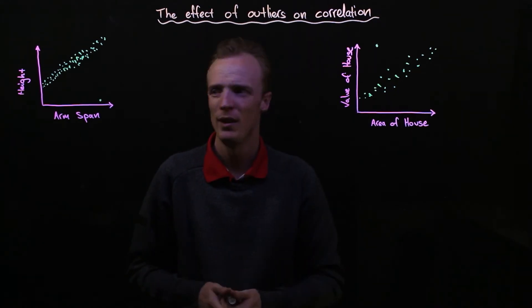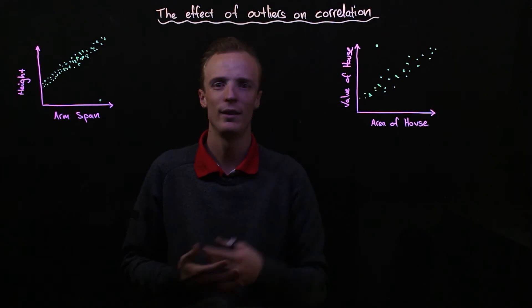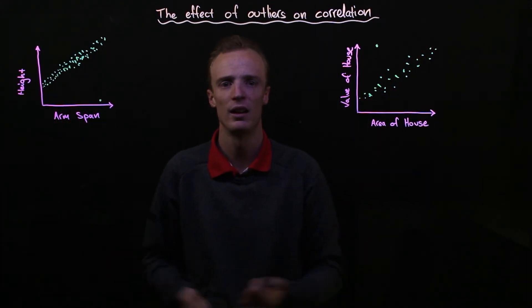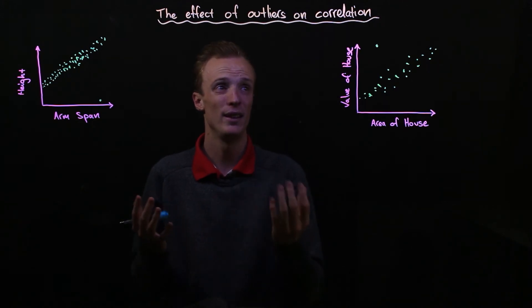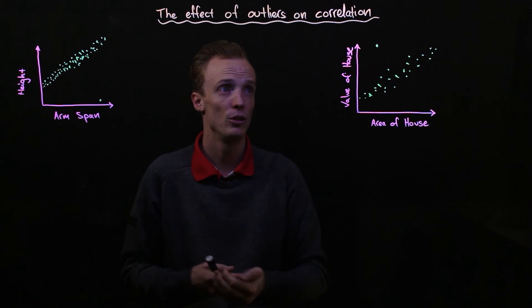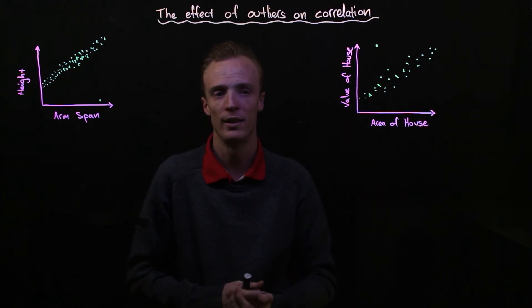So to summarize, outliers are these points that don't seem to follow the general trend of our data here. And they can have a significant effect on any sort of calculation that you do when we're looking at the correlation between these values.